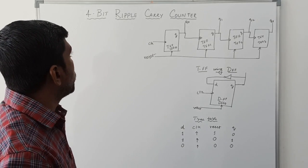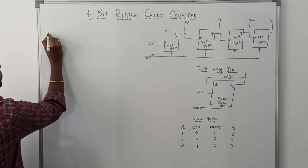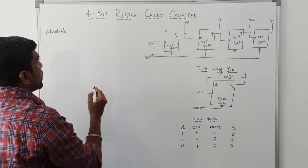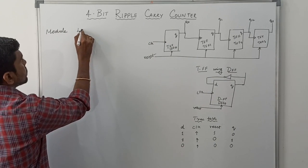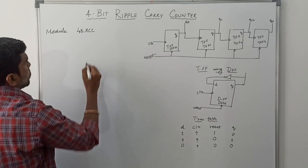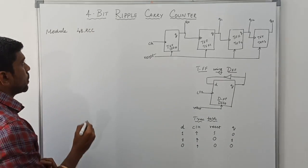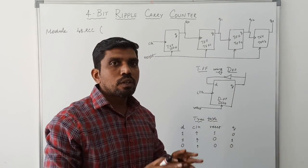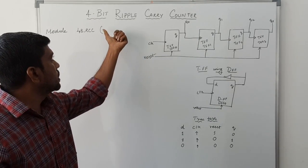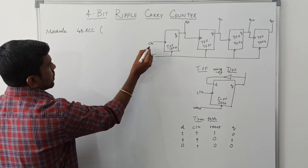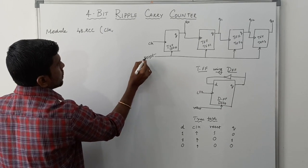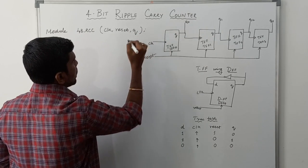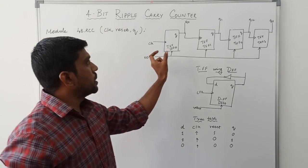Using this diagram, I am going to write the Verilog program for the 4-bit ripple carry counter. First write 'module', then the module name — here the module name is the 4-bit ripple carry counter, where RCC represents ripple carry counter. Within the brackets, list the variables used in the diagram. The variables are: clock, reset, and Q.